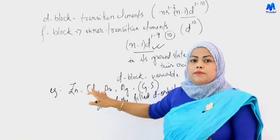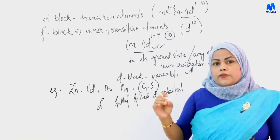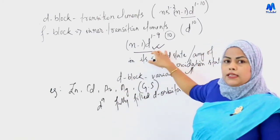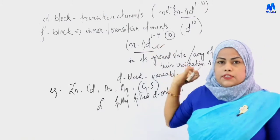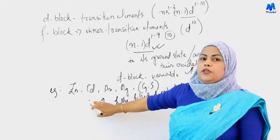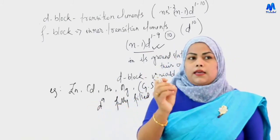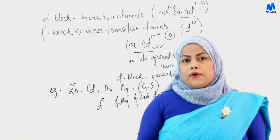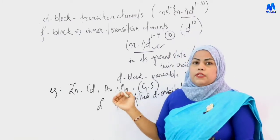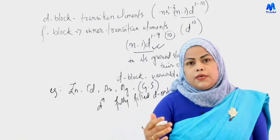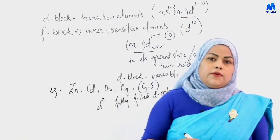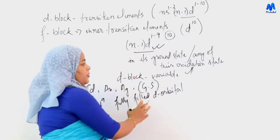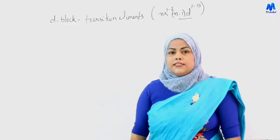For example, zinc, cadmium, gold, and silver — in their ground state, they have fully filled d orbitals. So they are not called transition elements. But in another oxidation state, if d¹ to d⁹ exists, then it will be called a transition element. The key difference between D block and transition elements is based on the electronic configuration.